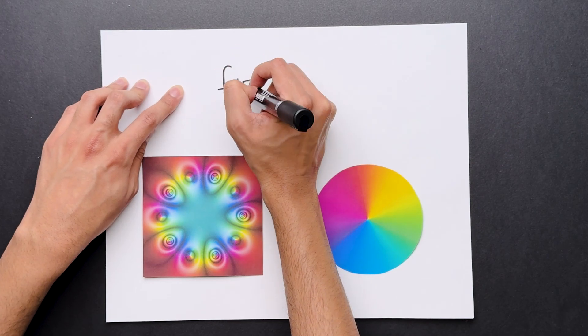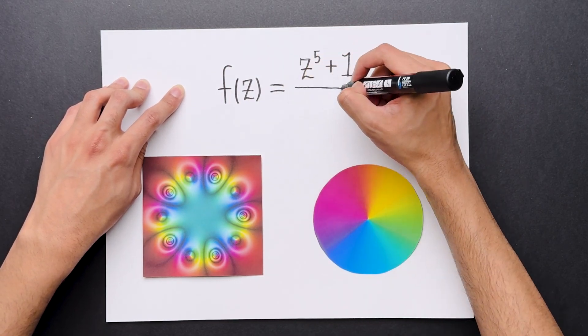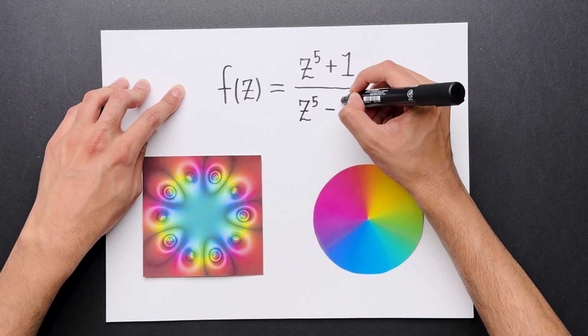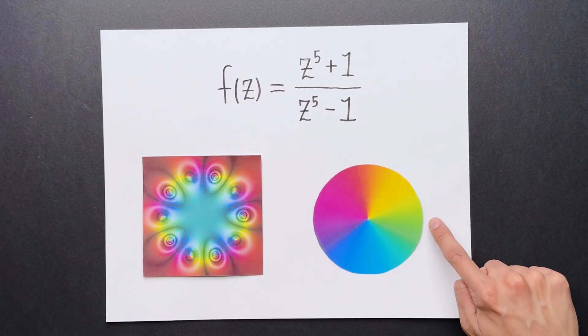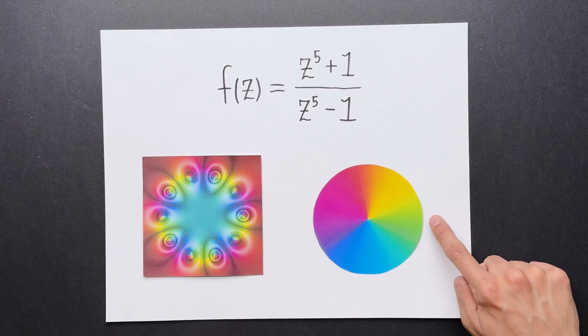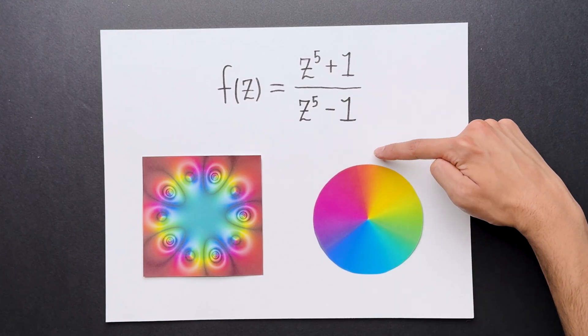Over here, we have a function f of z, defined by z to the fifth plus one, divided by z to the fifth minus one. The color represents the argument of the output. For example, if the color is yellowish-green, the argument is zero. When the color is changed to red, the corresponding argument is 90 degrees, and so on.